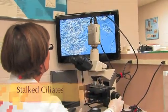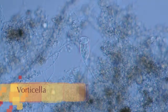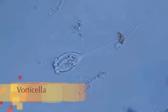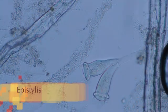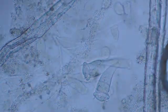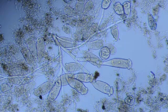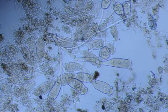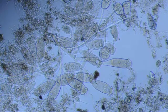First is Vorticella - these guys attach onto a flock of bacteria and have a retractable tail; they can be pretty quick. Then there's Epistylus. Similar to Vorticella, Epistylus also uses its tail to latch onto bacterial flock formations, however this organism is a little more passive and does not have the retractable feature, so it doesn't move around as much.